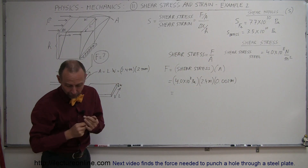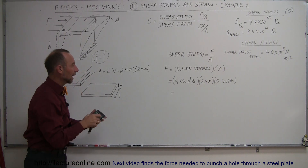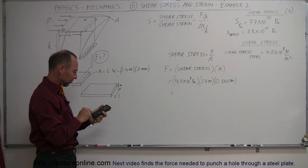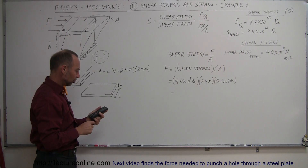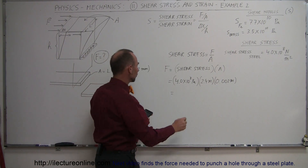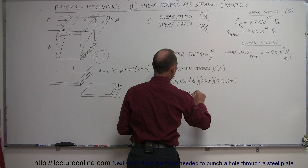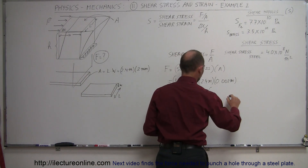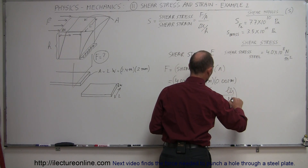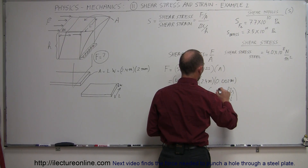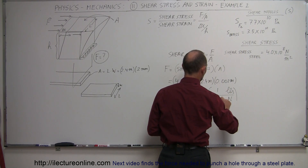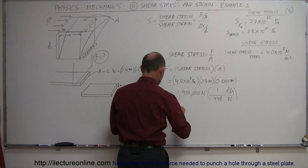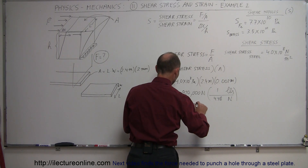That gives us the force required to cut off those pieces of metal. So 4×10⁸ times 2.4 times 0.002 equals 1,920,000 Newtons. Converting to pounds — since 1 pound is 4.48 Newtons — dividing 1,920,000 by 4.48 gives roughly 428,571 pounds.